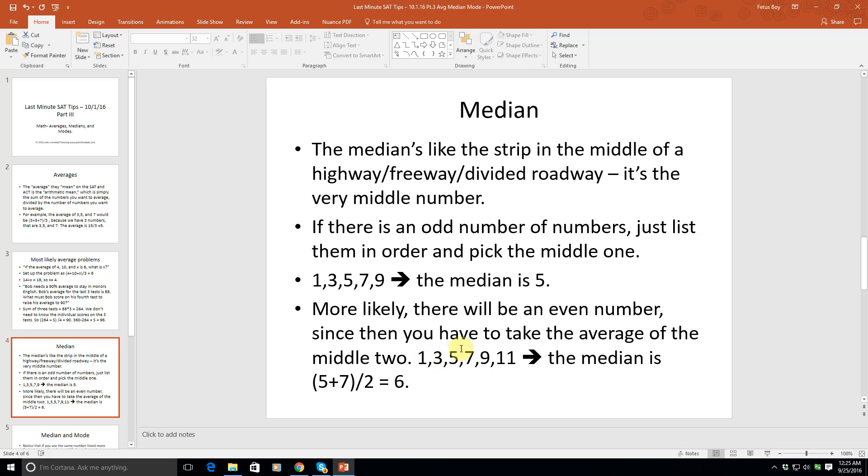It's more likely there will be an even number of numbers because they want to test if you know what to do: take the average of the middle two. For example, with 1, 3, 5, 7, 9, 11, the median is (5+7)/2 = 6. The SAT will ask about the more complex parts of the rule to see if you truly understand it.